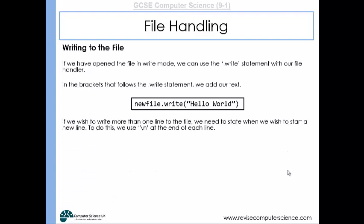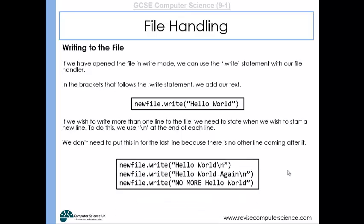If we wish to write more than one line to the file, we need to state when we wish to start a new line and we can do that with backslash n. We don't need to put this in for the last line because there is no other line coming after that. Here you can see we've got three lines being written to the text file: hello world, hello world again, and no more hello world. Each of these will be on a new line because there is that backslash n after each of the strings.